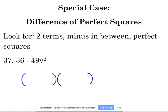We still end up with two sets of parentheses. The first number, 36 is 6 squared, so we put 6 in both sets of parentheses first. 49 V squared, 7 squared is 49, and V squared is V squared. So we put 7V in the other spot.